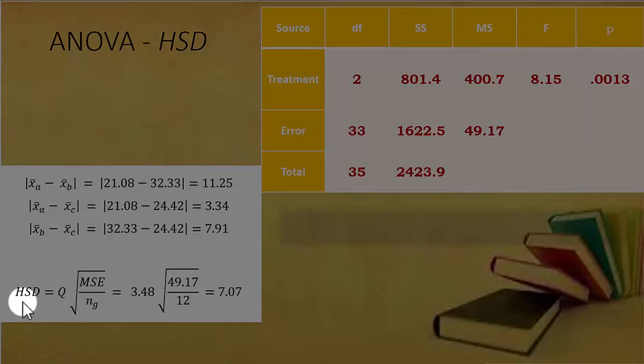The HSD tells us how far apart two sample means have to be before we can conclude that the corresponding population means are different.